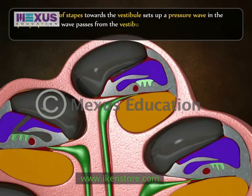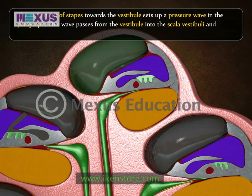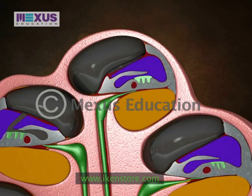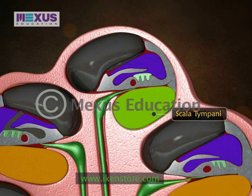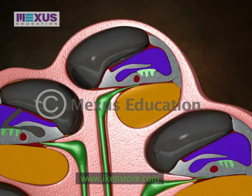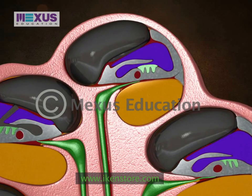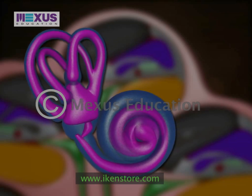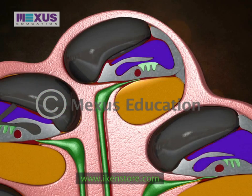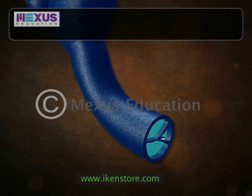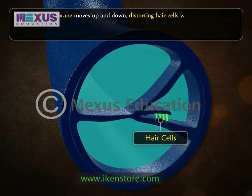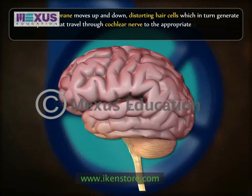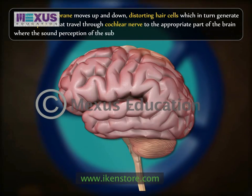This wave passes from the vestibule into the scala vestibuli and travels through it to the apex of the cochlea. At this point, scala vestibuli is continuous with scala tympani. The pressure waves pass into scala tympani and again traverse the whole length of the cochlea. In this way, vibrations are set up in the perilymph and through it in the basilar membrane. The basilar membrane moves up and down, distorting hair cells, which in turn generate nerve impulses that travel through the cochlear nerve to the appropriate part of the brain where sound perception is produced.